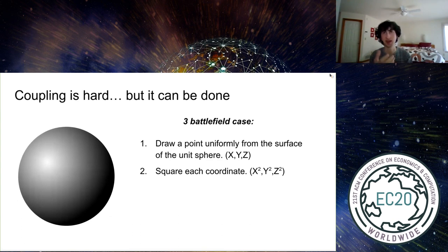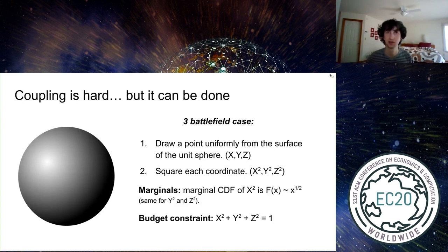So here's the intuition of how we do it. So let's consider first a three-battlefield case. We have three battlefields and three players. Each player is going to draw a point uniformly from the surface of the sphere. Then they're going to just square each coordinate of the point they drew, and that's it. That will be their strategy, along with some scalings. So this is going to satisfy our marginals. It's easy to check that the CDF is correct, and it'll satisfy the budget constraint, because the L2 norm of the sphere is by definition constant. But now the question is, what if we have more than three battlefields? And this is where it becomes a little more tricky, and this is where the heart of our paper is.